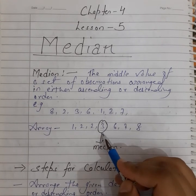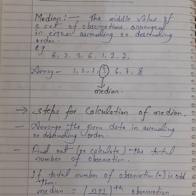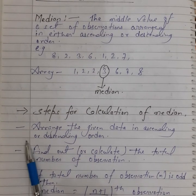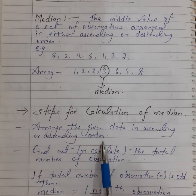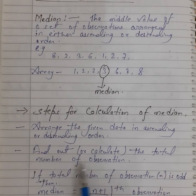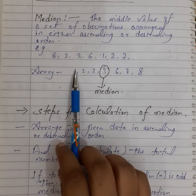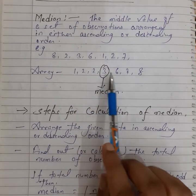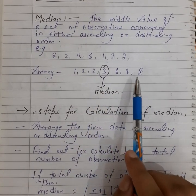The middlemost observation of given data is called the median, so the median of the given example is 3. Now, how we calculate median — the steps for calculation of median: first, arrange the given data in ascending or descending order to make the array; second, find out the total number of observations — count the total number of observations given in the particular data.